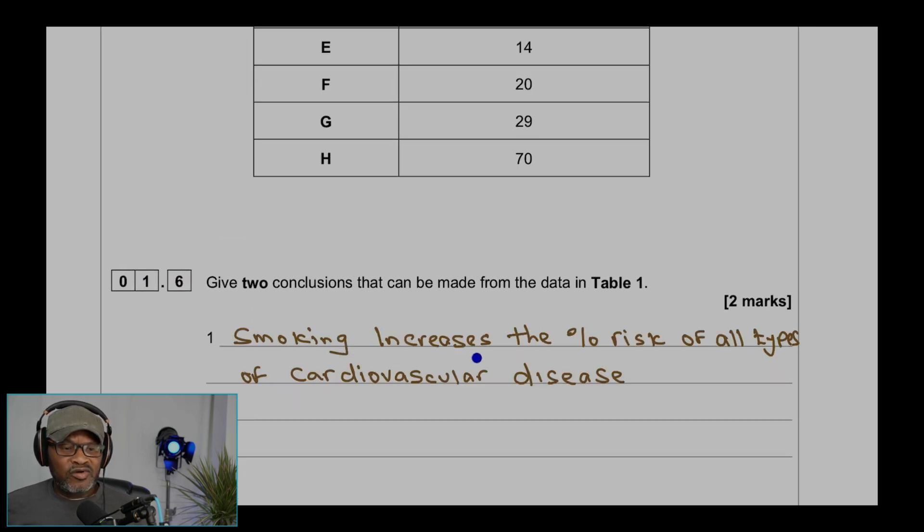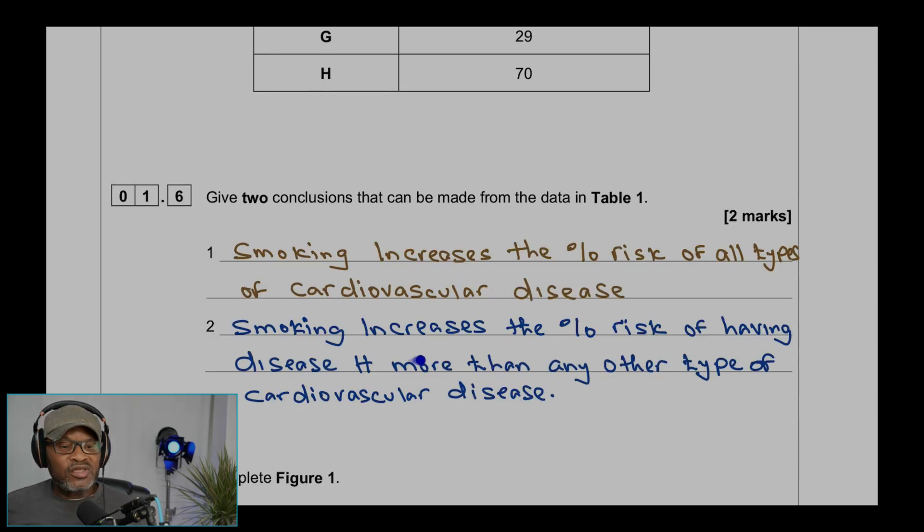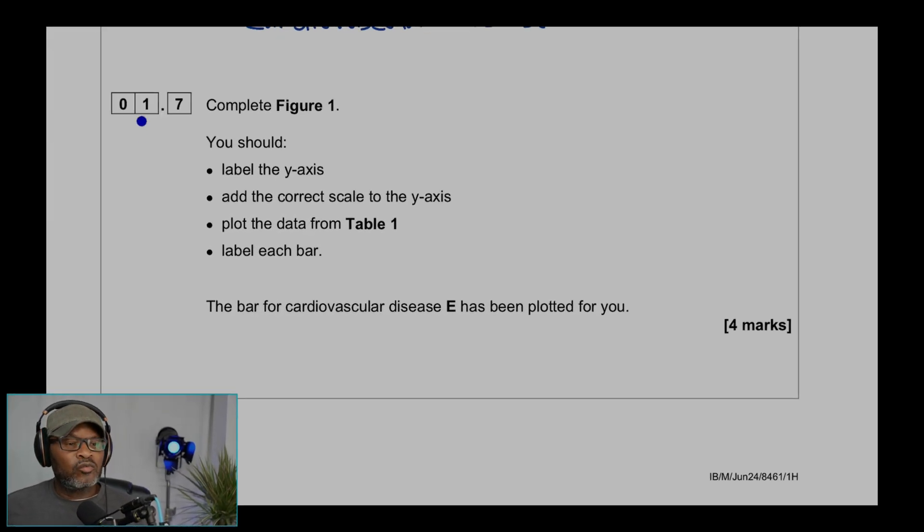Smoking increases the percentage risk of all types of cardiovascular disease. Smoking increases the percentage risk of having disease H more than any other type of cardiovascular disease because H is 70%.